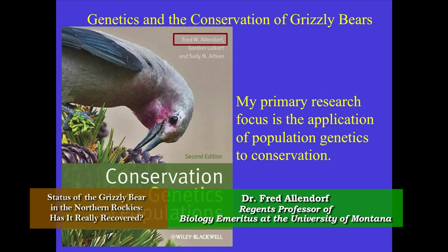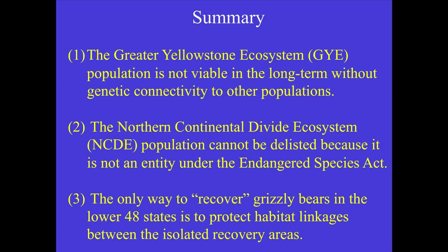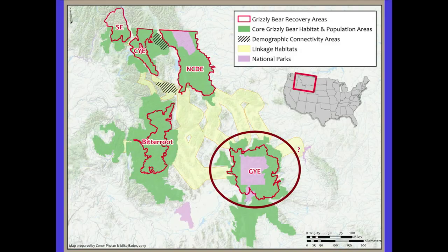My primary interest since 1976 has been using genetics to apply to problems in conservation. Here are my conclusions: first, the greater Yellowstone ecosystem population is not viable in the long term without genetic connectivity. Second, the NCDE population cannot be delisted because it is not an entity under the Endangered Species Act. And finally, the only way to recover grizzly bears is to protect habitat linkages between all the recovery areas.